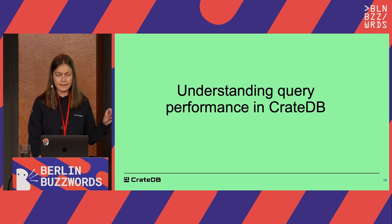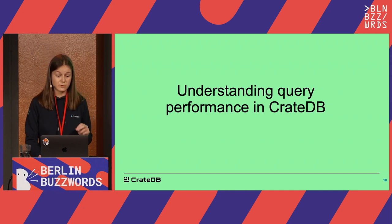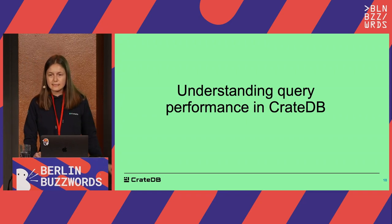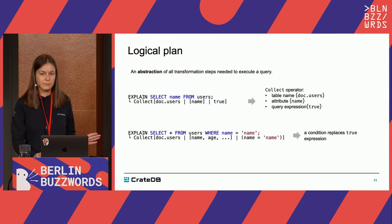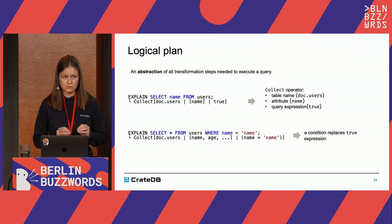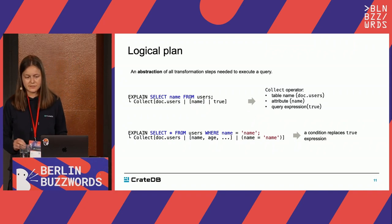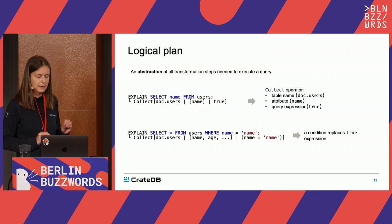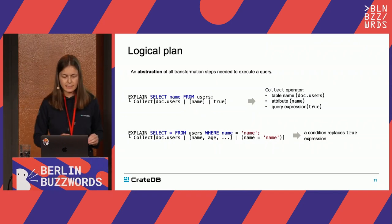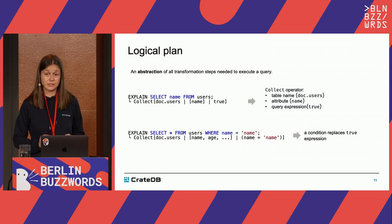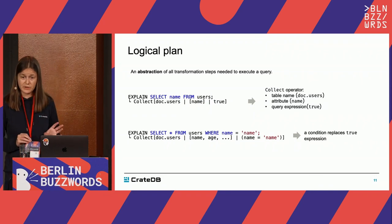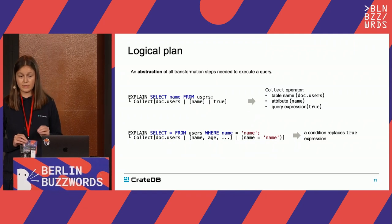With this in mind, I would like to show you how we can understand the performance of a query in CrayDB. This talk is about CrayDB, but I believe the concepts and methodology are applicable to any other distributed database. The first thing you should start thinking about is how your query gets executed. One way to do this is to look at the logical plan. In CrayDB, you can use a command called EXPLAIN to give you a logical plan of your query, which is an abstraction of all the transformation steps needed to execute the query.